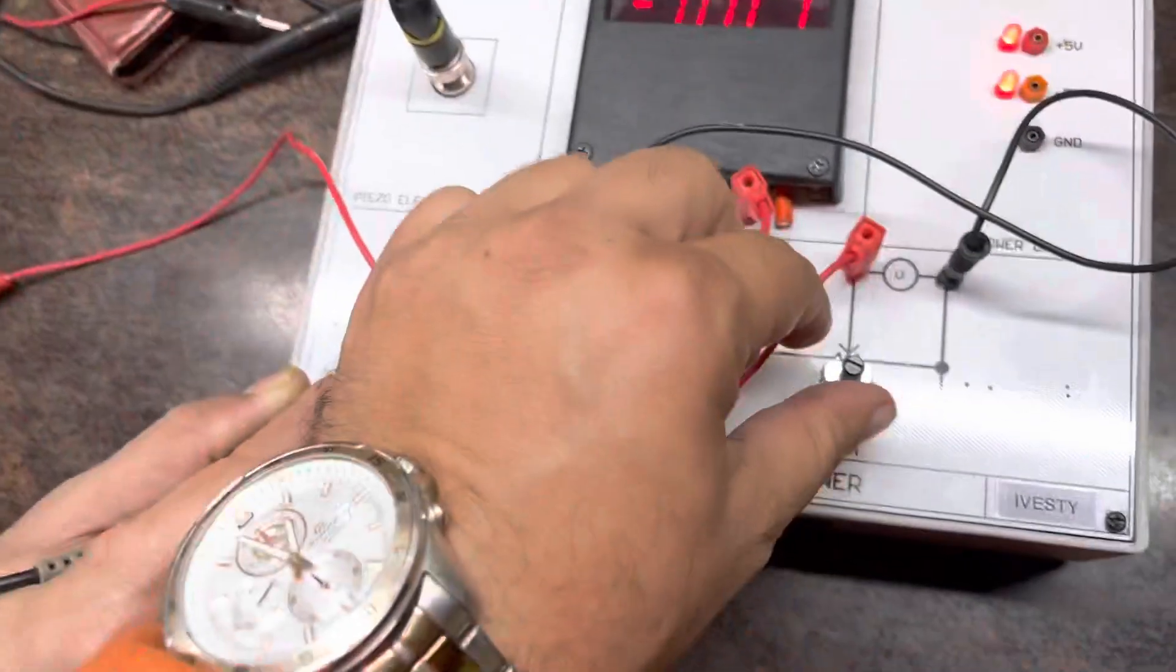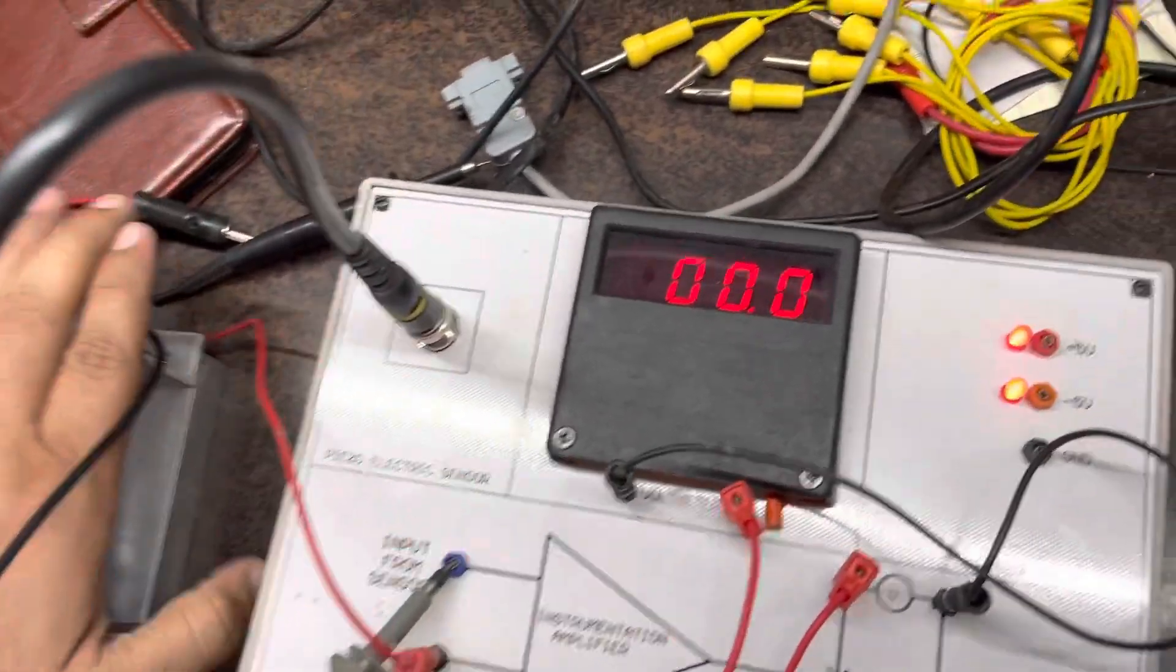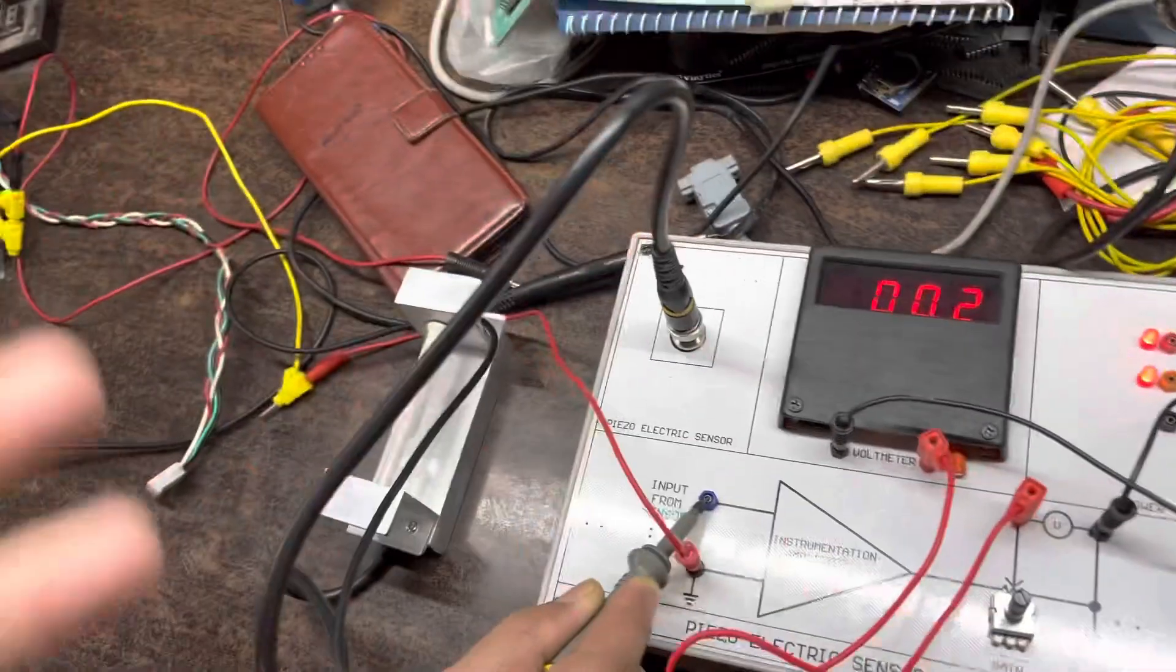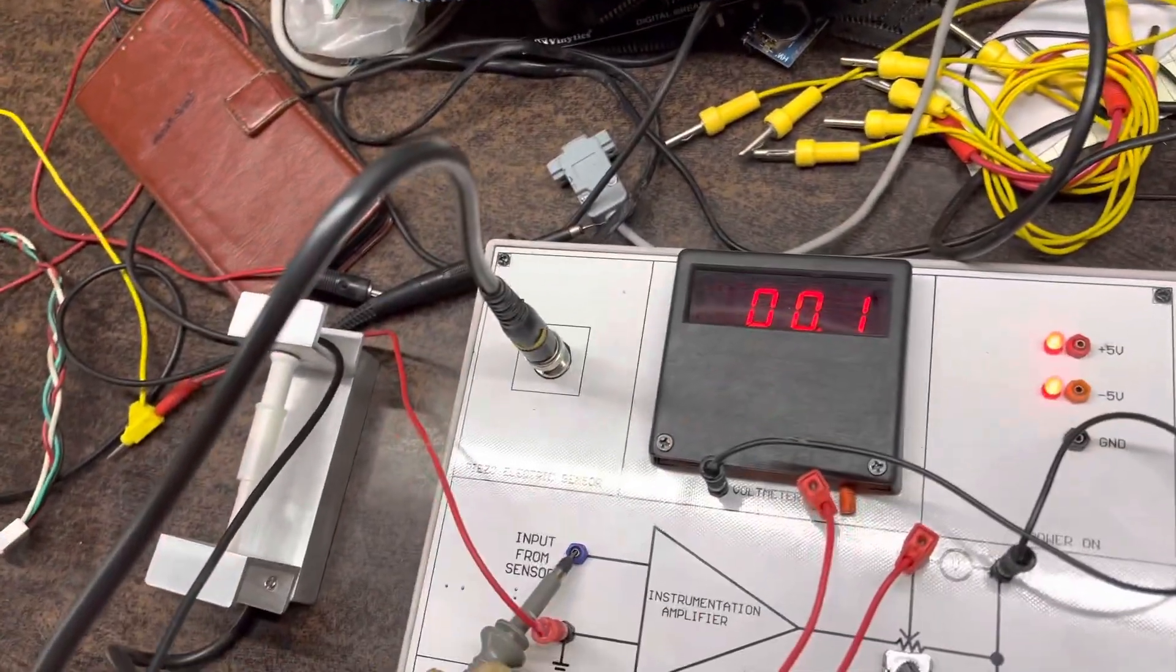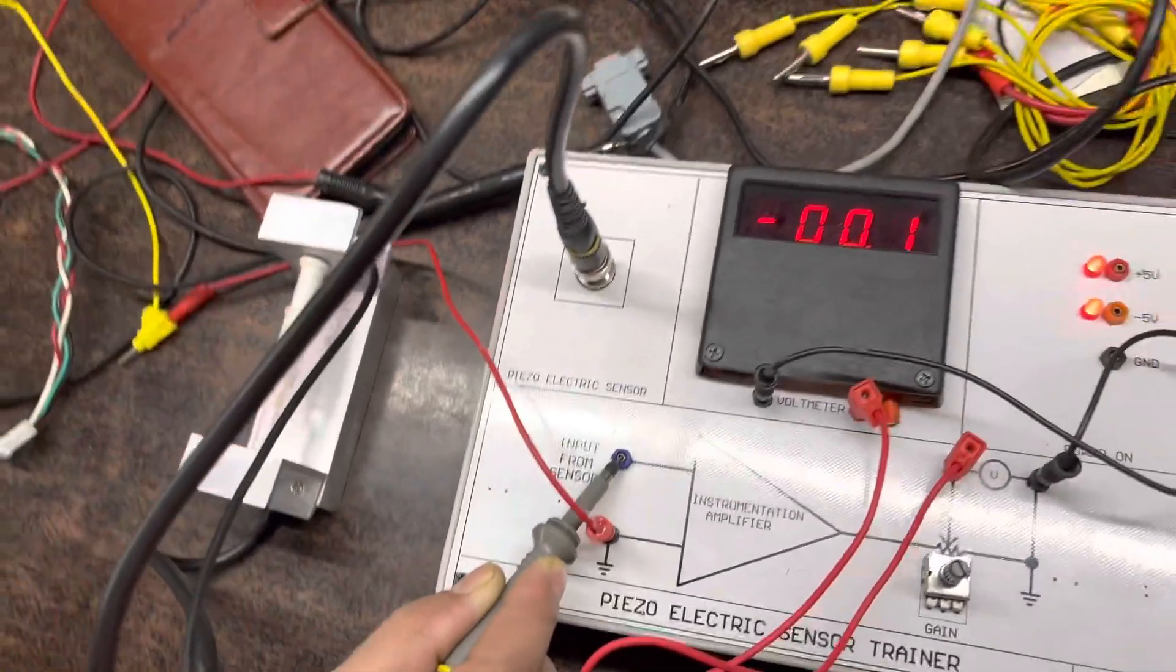And similarly, if we move the gain to the maximum and then press it, there is a representation of the impulse in the meter of the actual input that it is receiving from the piezoelectric sensor.